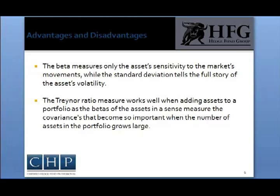As a consequence, the Treynor measure addresses one of the drawbacks of the Sharpe ratio. The Treynor measure works well when adding assets to a portfolio, as the betas of the assets in a sense measure the covariance that becomes so important when the number of assets in a portfolio grows large.